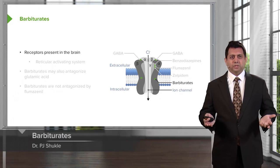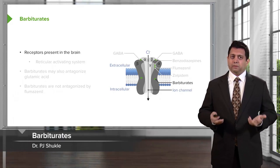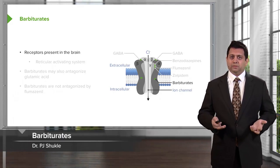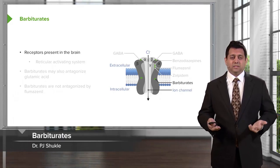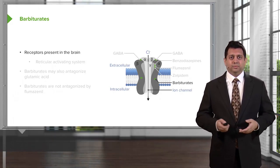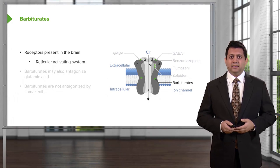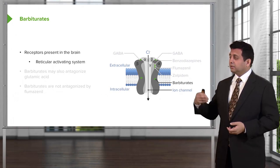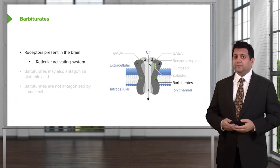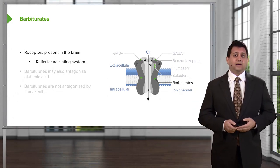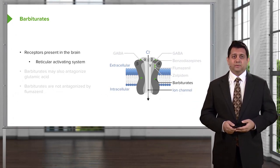Let's move on to the barbiturates. The barbiturate receptors, the GABA-A receptors, are also present in the brain. We see those ones often in the reticular activating system of the brain.